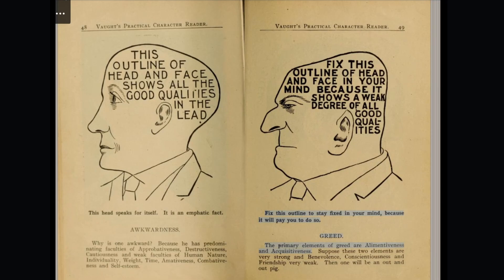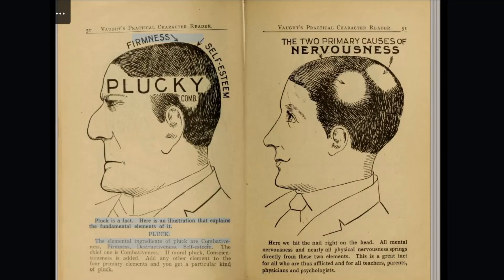Greed. The primary elements of greed are alimentiveness and acquisitiveness. Suppose these two elements are very strong and benevolence, conscientiousness, and friendship very weak — then one will be an out-and-out greedy person. Pluck. The elemental ingredients of pluck are combativeness, firmness, destructiveness, and self-esteem. The chief one is combativeness. If moral pluck is required, conscientiousness is added. Add any other element to the primary elements and you get a particular kind.